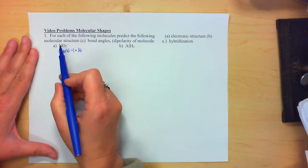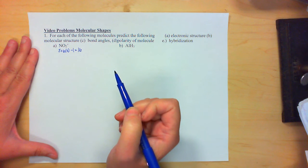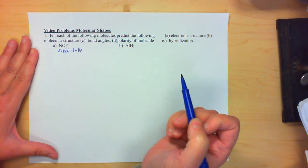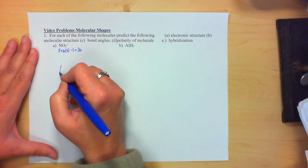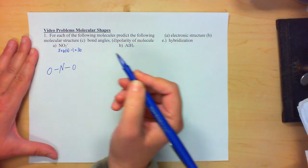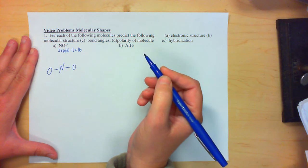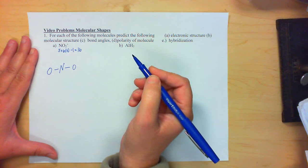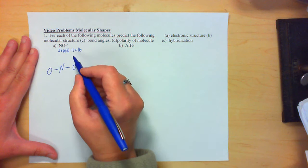Now when we write shapes, the first atom listed, unless stated otherwise, will be the central atom. So we're going to have nitrogen with oxygen on either side. You can put them in any position, north, south, east, west, as long as you attach them.